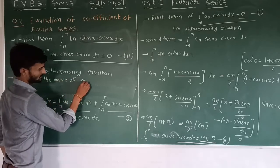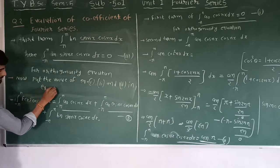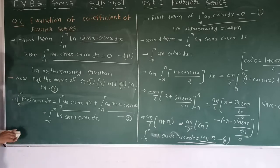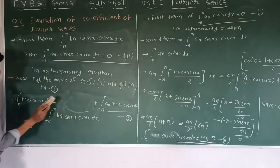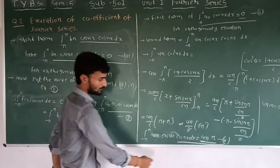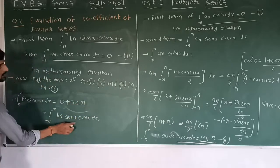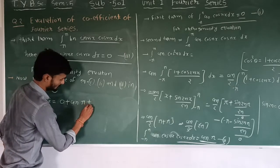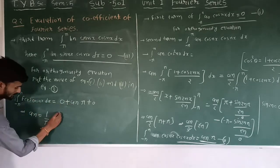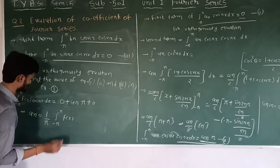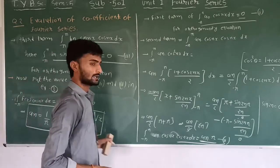Putting the values of equations I, II, and III into equation number 3: the first term (A0 cos(nx)) is zero, the second term gives AN times pi, and the third term is zero. So AN equals 1 upon pi times the integral from minus pi to pi of F(x) cos(nx) dx.